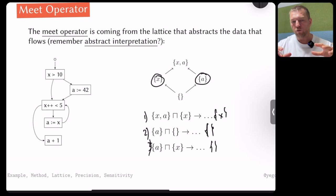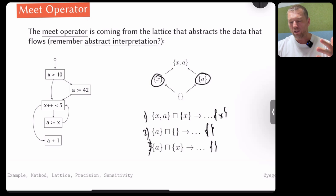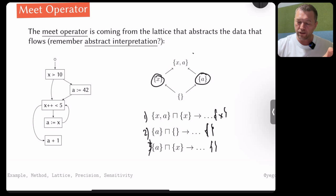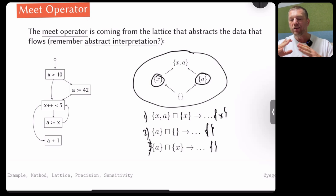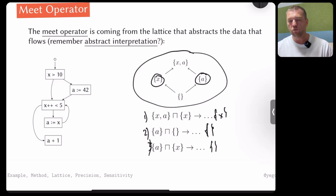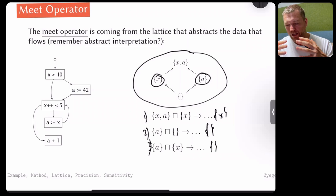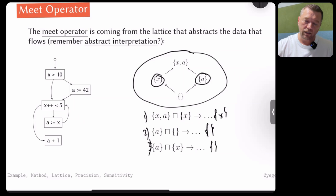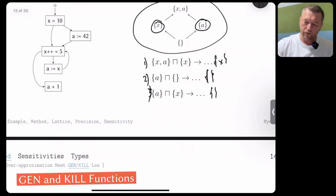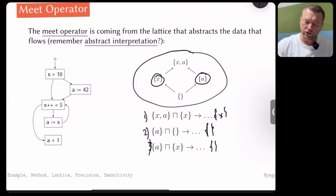When we define the domain for data flow analysis, we also define the lattice on that domain — the relationship between data flow facts. Without this relationship we cannot put facts together. The analysis proceeds by going through the control flow graph, creating facts at each block using transfer functions, and iterating until convergence.